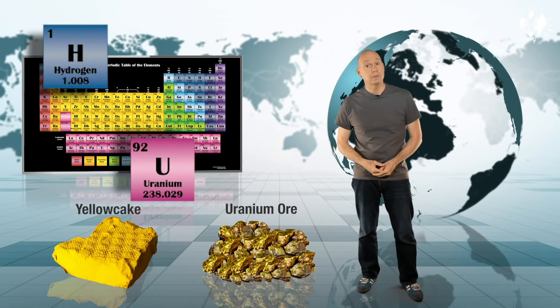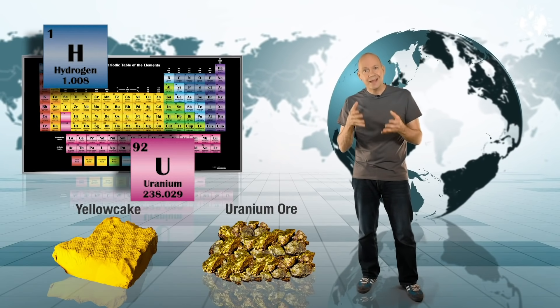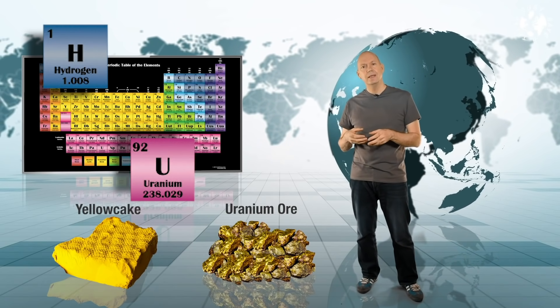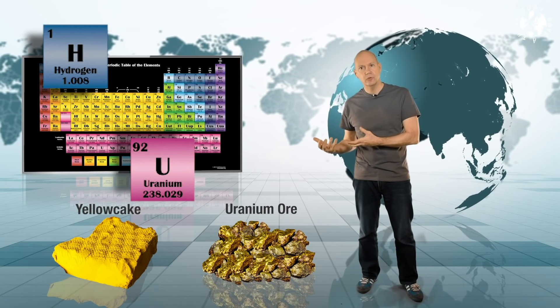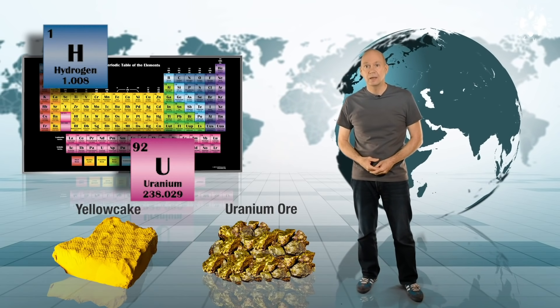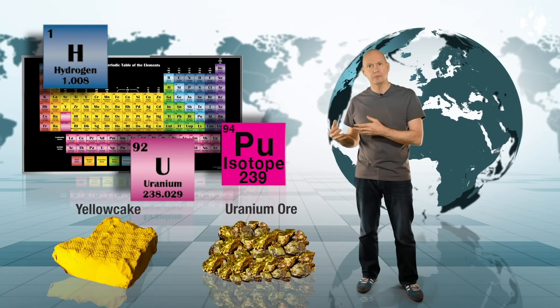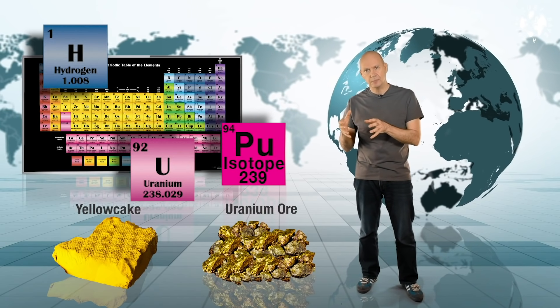The mixture still has loads of uranium-238 in it though, and that stuff is what's known as fertile, which means instead of breaking apart when it gets hit by neutrons, it absorbs a neutron and transforms into nasty waste products like weapons grade plutonium-239. And that's why this kind of reaction is called uranium-plutonium cycle.